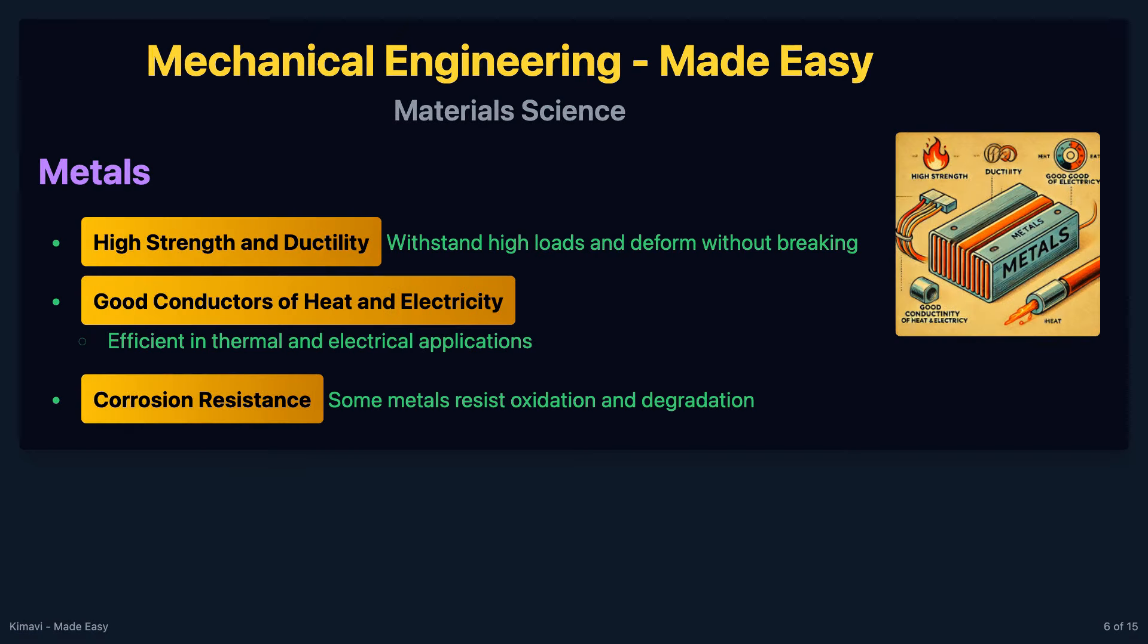Metals are materials that are typically hard, shiny, malleable, fusible, and ductile, with good electrical and thermal conductivity. Examples include iron, aluminum, copper, and titanium. Metals can withstand high loads, are good conductors of heat and electricity, and some, like stainless steel and aluminum, have good corrosion resistance.